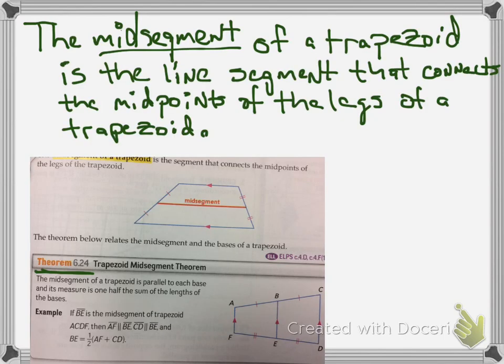let's talk about a midsegment. A midsegment of a trapezoid is the segment that connects the midpoints of each leg. Sort of like that. And you can see there is a theorem there that can go with it. The midsegment of a trapezoid is parallel to each base, and its measure is one-half the sum of the lengths of the bases.